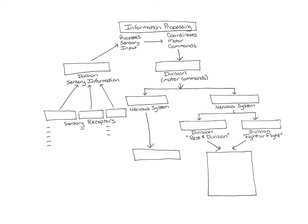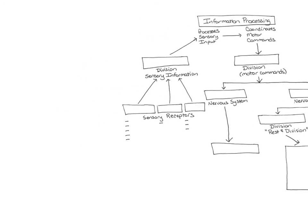This is Chapter 12, and to begin with, we're going to do an overview of the nervous system and the organization of the nervous system.